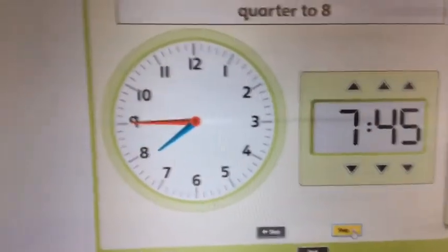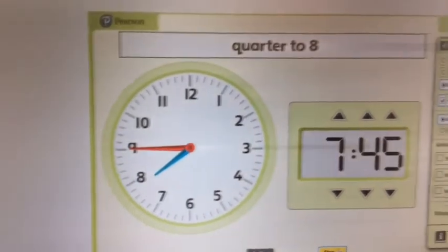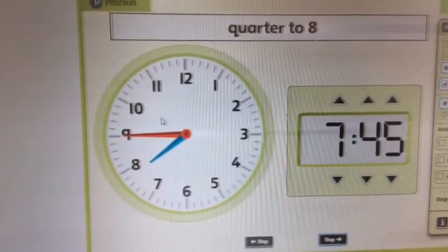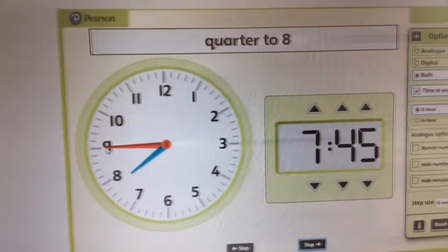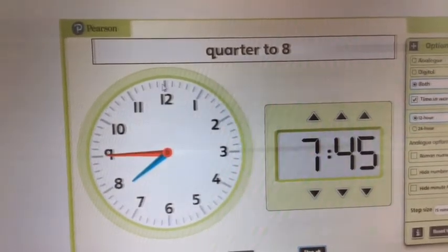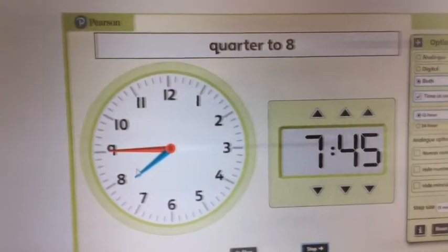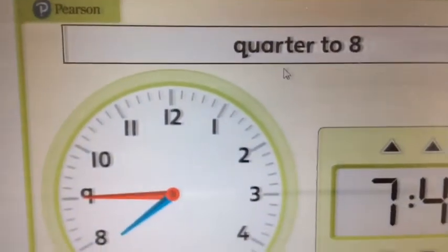Now, quarter to, I always find a bit harder. This looks like it's very nearly 8 o'clock, doesn't it? But the big hand has still got a quarter of the clock to tick through to get to 8 o'clock. So we call it quarter to 8.